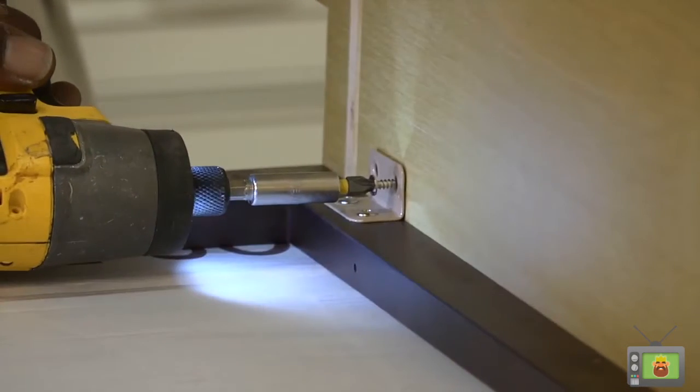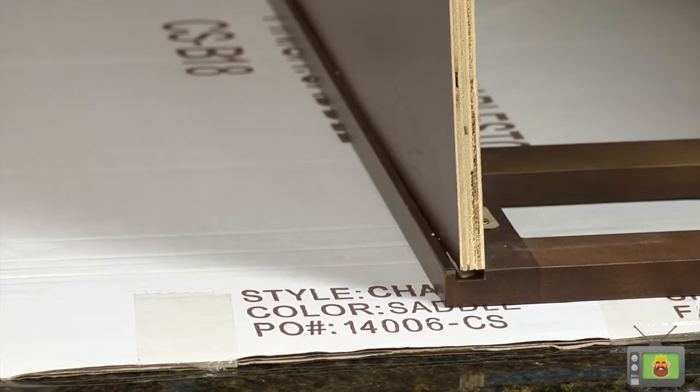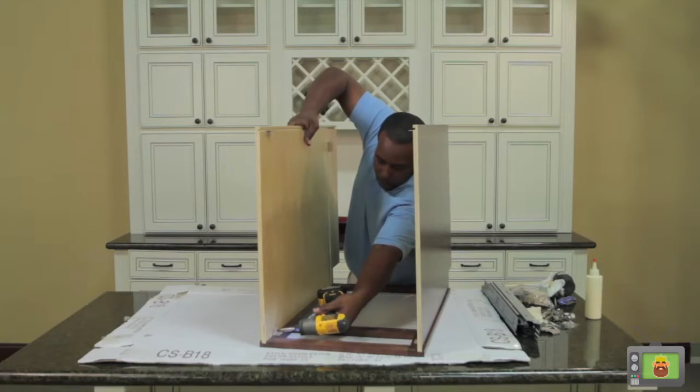Alternatively, a pneumatic staple gun can be used to fasten the two pieces together by placing a staple every four to five inches. Continue on and complete the other side the same way.